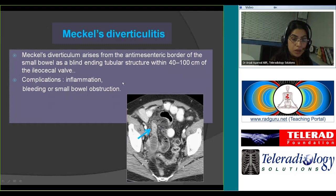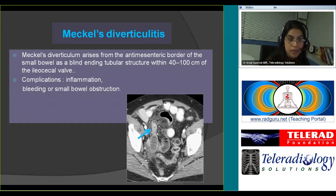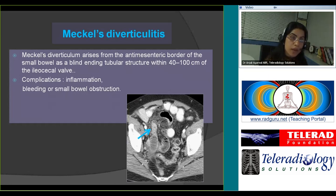Meckel's diverticulum can also get inflamed. It arises from the antimesenteric border of the small bowel and is seen as a blind-ending tubular structure, usually within 100 centimeters of the ileocecal valve. Apart from getting inflamed, it can result in bleeding due to ectopic gastric mucosa or cause small bowel obstruction. Before diagnosing Meckel's diverticulitis, identify the normal appendix and trace the distal ileum.